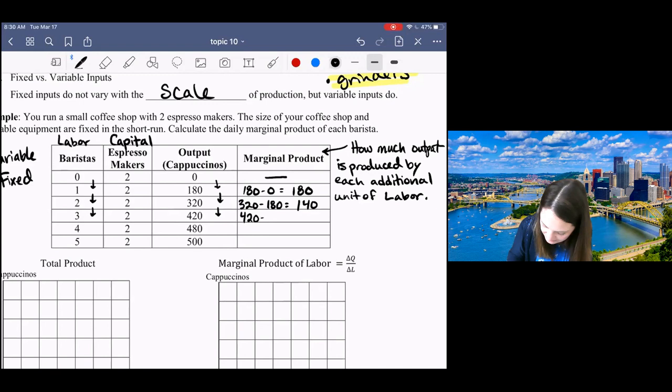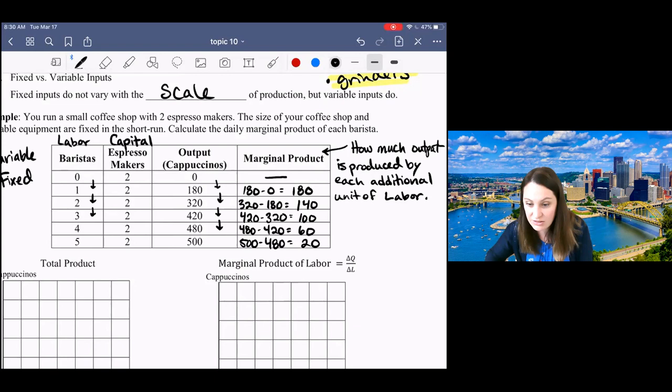Hiring the second worker increases output by 140 cappuccinos. We're going to do the same thing as we move down the table, subtracting our total output from our previous total output to get the marginal product of each worker. The fourth worker increases output from 420 to 480, which is 60 additional cappuccinos. What you'll notice is that marginal product is decreasing as I hire more workers.